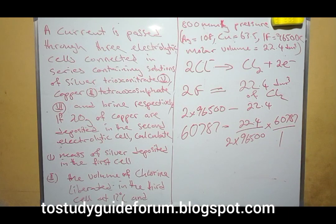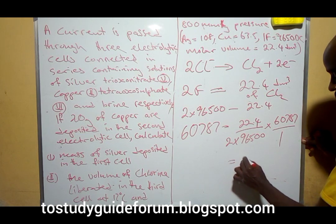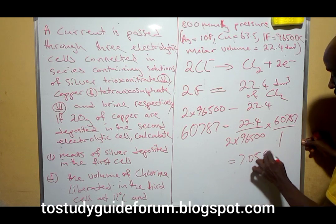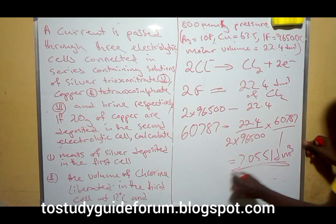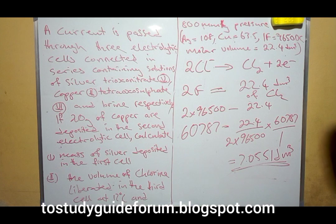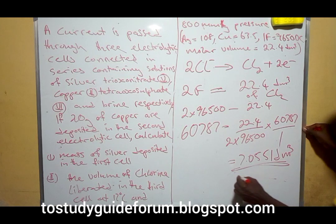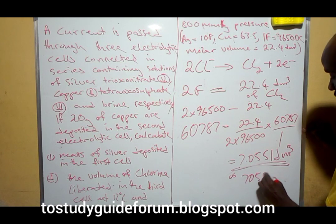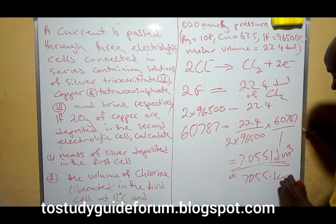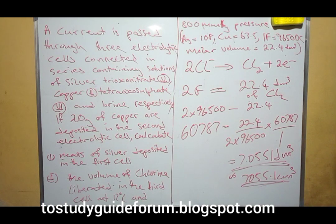So what it means is that two times 96,500 coulombs gives us 22.4 dm³. When we divide, we get the value to be 7.0551 dm³. That is the volume of chlorine that would be liberated at STP. If we convert it to cm³, we have 7,055.1 cm³.